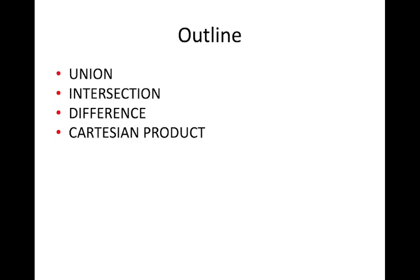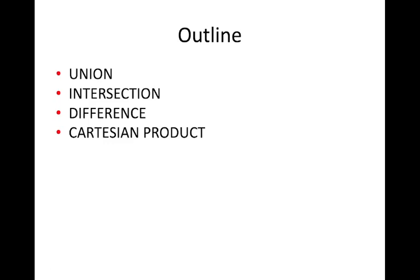When you studied set theory in school, you already learned about union operation A union B, A intersection B, A difference B, and Cartesian product — A cross B, also called cross product. The same set of operations can be applied to relations as well. You can apply union, intersection, difference, and Cartesian product among two relations or tables.